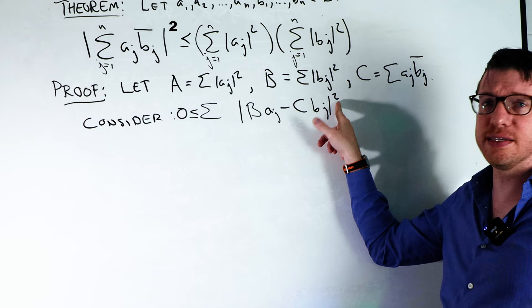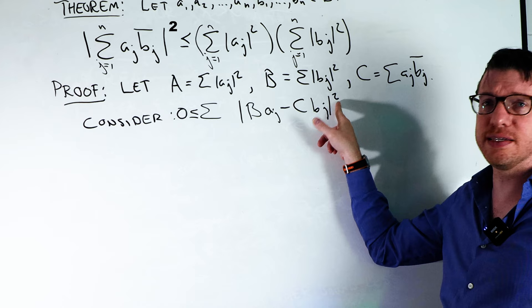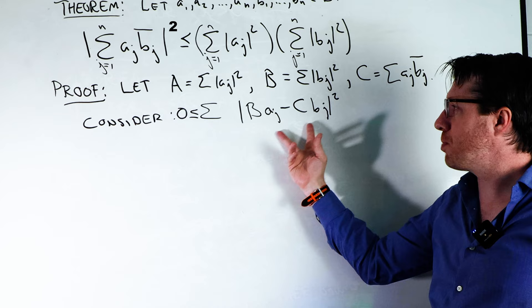This is in absolute values, it's a complex number, and this is squared. I know that since this is an absolute value squared, and it's a sum of these terms, these are all positive. Sums of positive numbers are positive, so therefore it's bigger than or equal to 0.